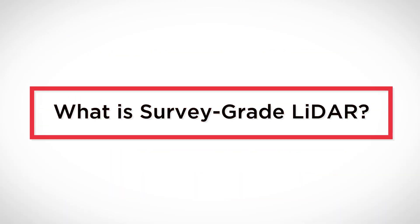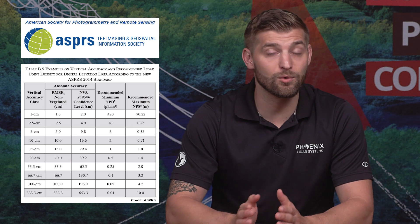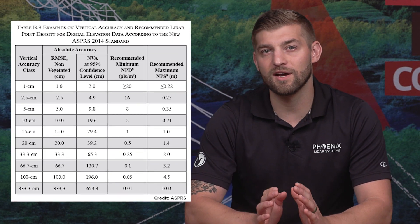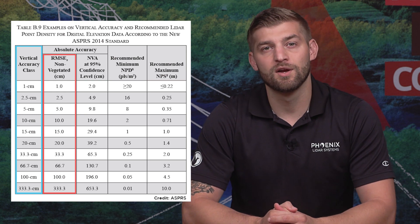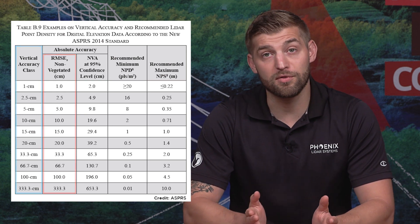So what is survey grade LiDAR? If there is no universal definition of what survey grade actually means, how do we know which accuracy to achieve for LiDAR projects? There are numerous methodologies for how to measure LiDAR accuracy, but the industry standard to follow is the American Society for Photogrammetry and Remote Sensing's Positional Accuracy Standards, which separates different grades or classes of LiDAR. Specifically, LiDAR is separated by vertical accuracy classes, ranging from 1 centimeter to over 3 meters. Understanding these class distinctions is critical to the success of your project and business.